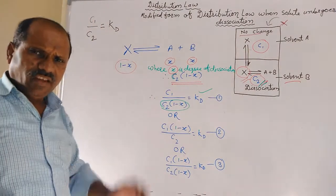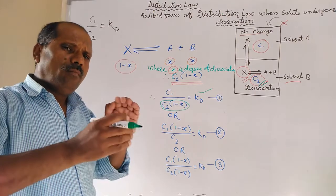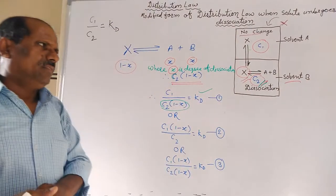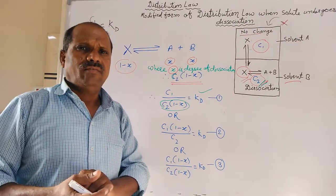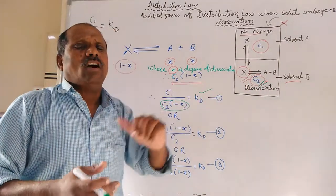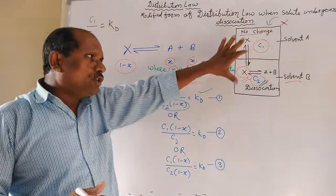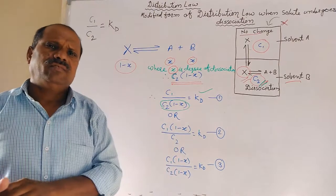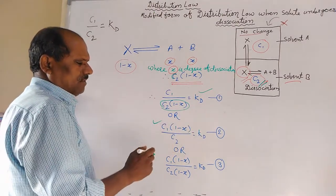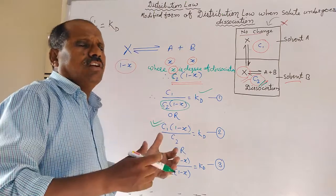This is the equation of the modified distribution law whenever dissociation of solute X takes place in solvent B. But there is another possibility: dissociation may take place in solvent A, while molecules of X remain normal or unchanged in solvent B. In that case, the modified form of the distribution law is: C1 into (1 minus x) upon C2 equals KD. This is the form of the distribution law whenever solute shows dissociation in solvent A.